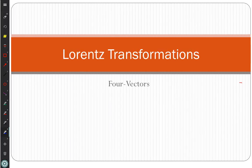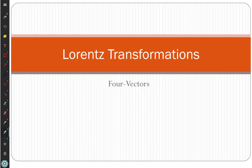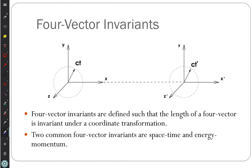We will go on to Lorentz transformations and working with four vectors. The Lorentz transformation is the way we transform an event in one reference frame to an event in another reference frame. An event is an X, Y, Z coordinate plus a time. We start off by looking at four-vector invariants - the four vector has a length, and we define how we calculate that length in a way that doesn't depend on your reference frame.